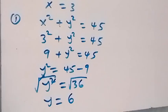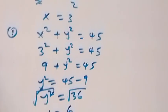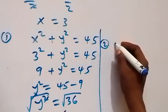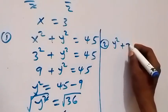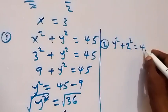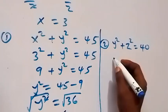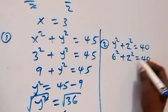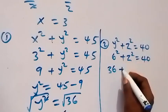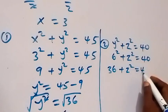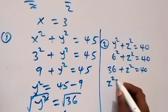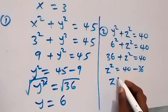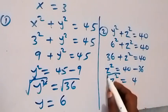To get z, from equation 2 we have y squared plus z squared equals 40. Since y equals 6, this becomes 6 squared plus z squared equals 40. Since 6 squared is 36, we have 36 plus z squared equals 40. Taking 36 to the other side, z squared equals 40 minus 36, which equals 4.